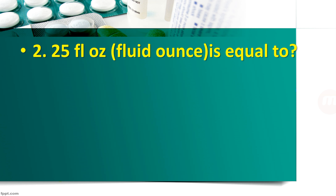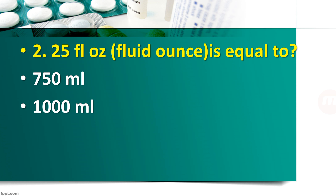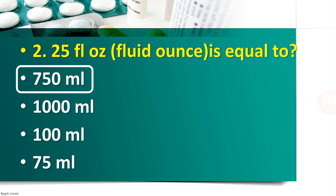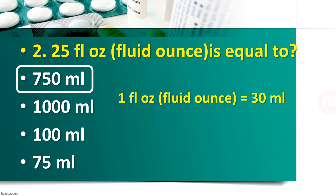Question number 2: 25 fluid ounce is equal to — 750 ml, 1000 ml, 100 ml, or 75 ml? The right answer is 750 ml. Here is the conversion: 1 fluid ounce is equal to 30 ml. So, 25 fluid ounce is equal to 750 ml. Aapko kya karna hai? 25 into 30 karna hai, and you will get the answer 750 ml. Just remember: 1 fluid ounce is equal to 30 ml.